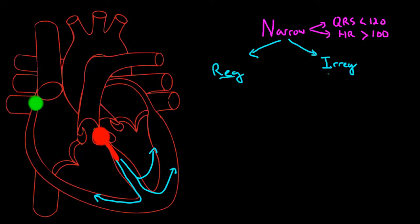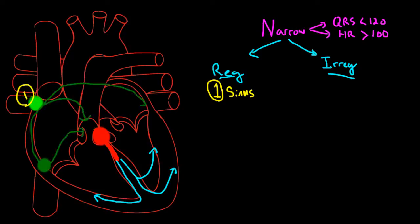For sinus tachycardia, you have a regular narrow complex tachycardia with a P for every QRS and a QRS for every P, and the P waves are normal, meaning upright in lead 2. Atrial tachycardia is also a narrow complex tachycardia that's regular with a P for every QRS and a QRS for every P, but the P waves are abnormal because you start in an ectopic atrial focus.